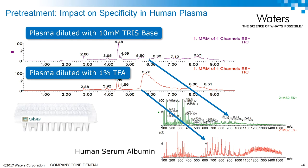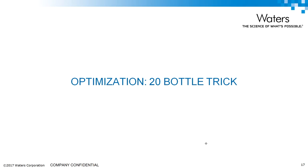One final example on pretreatment — an insulin methodology. When we pretreated the plasma with acid, the middle chromatogram showed a broad peak in the final eluate. We summed it, deconvoluted, and found a lot of human serum albumin. Once we changed the pretreatment to base, that peak was eliminated. Under basic conditions, HSA passes right through the extraction device upon loading, leaving nothing in the final eluate — significantly improving specificity through pretreatment.